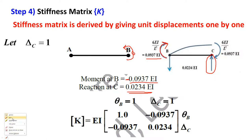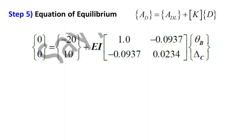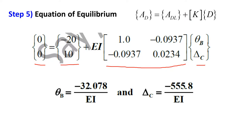The final stiffness matrix K is assembled: first column from theta_B = 1 figure and second column from delta_C = 1 figure. Applying the compatibility condition AD = ADL + K × D with AD = [0, 0] and ADL = [−20, +10], we solve two equations with two unknowns. The results are: theta_B = −32.078/EI and delta_C = −555.8/EI.